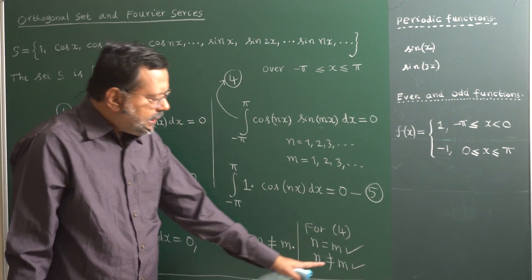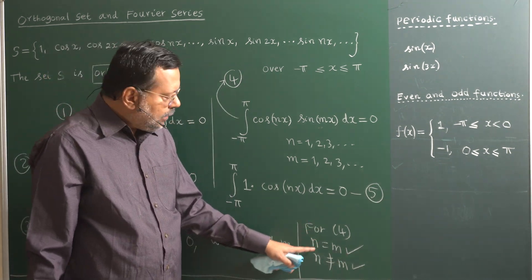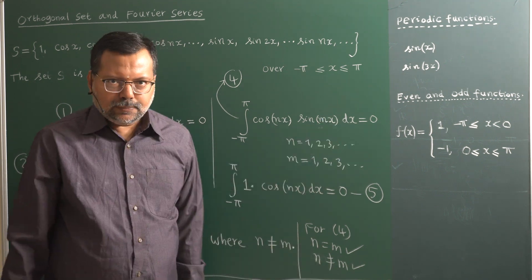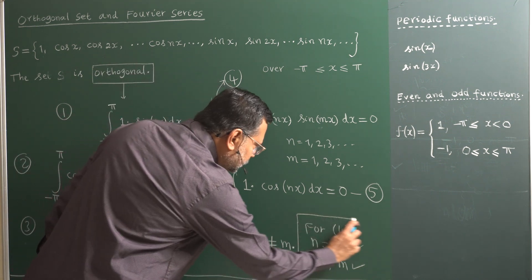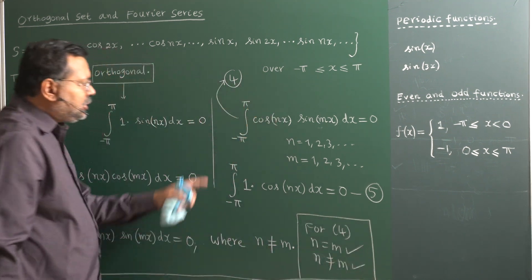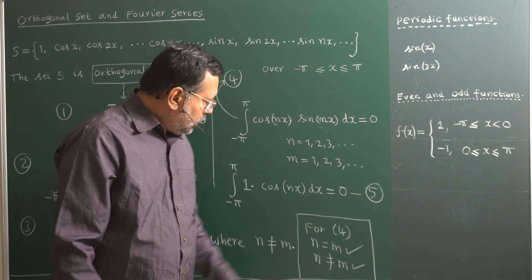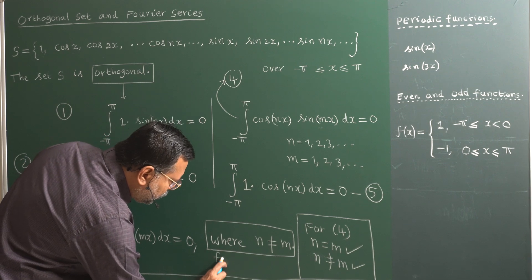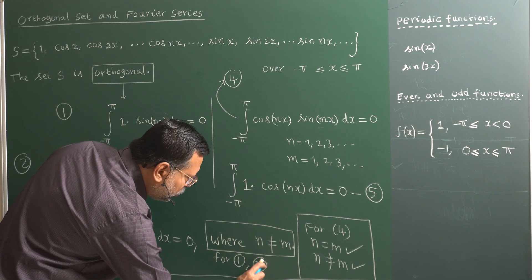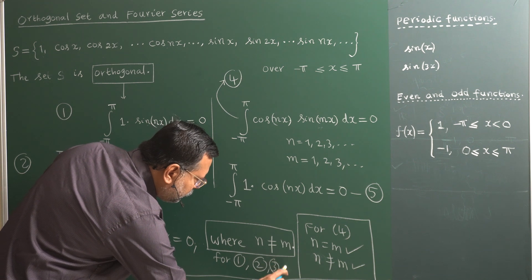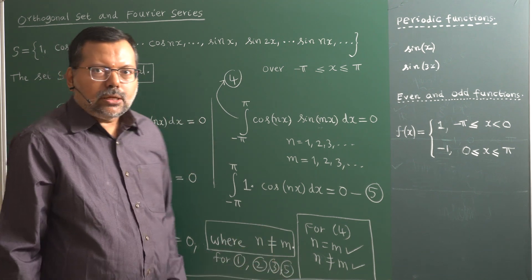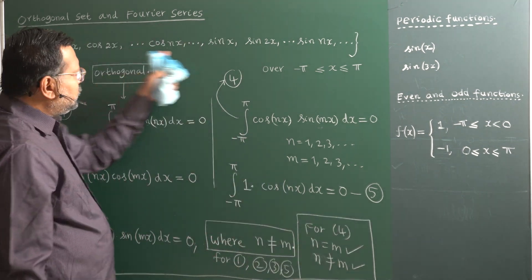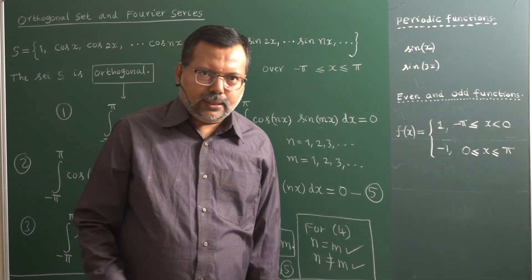For equation four, both conditions are applicable: n equal to m also gives zero, and n not equal to m also gives zero. But for all other equations — one, two, three, and five — only the condition n ≠ m must hold. If these conditions are satisfied, we say that this particular set is an orthogonal set.